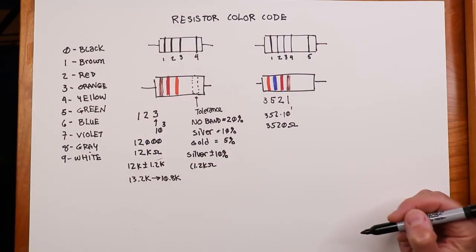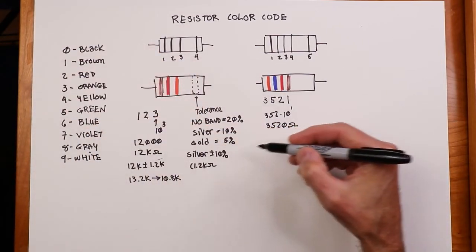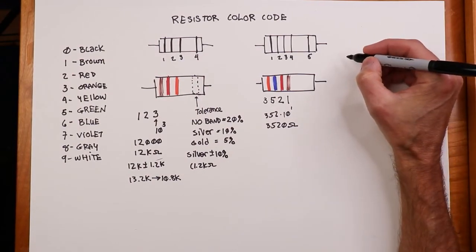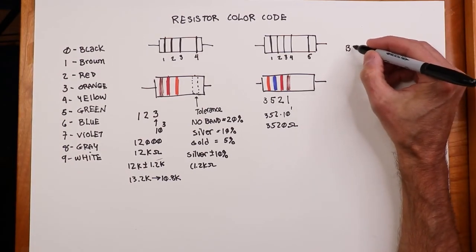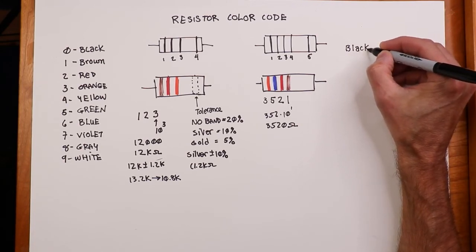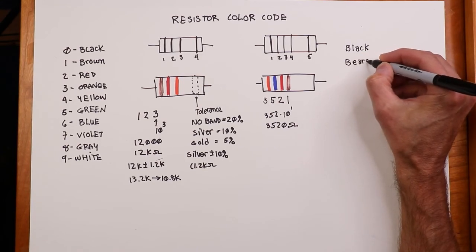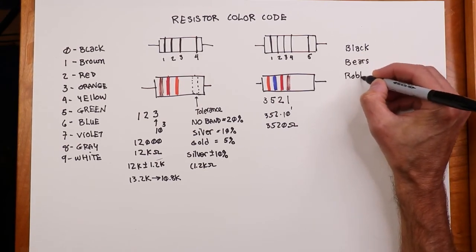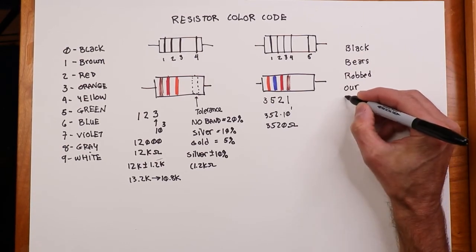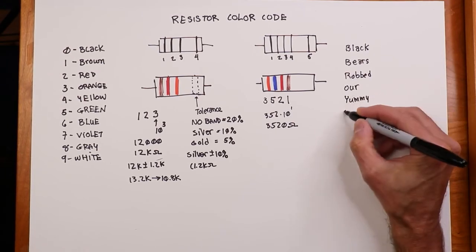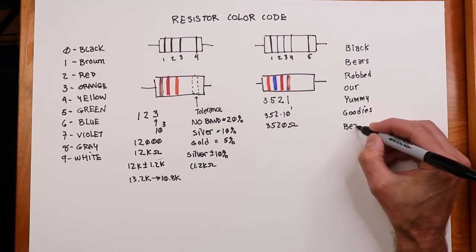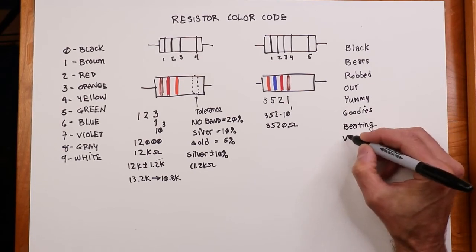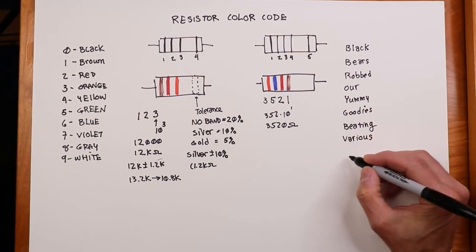How do you remember this? Well, there's different techniques. A little mnemonic that you might use. So in other words, the first letter spells out a little sentence. That's the one I like. I like to call it the Yogi Bear Picnic Mnemonic. So it goes: Black bears robbed our yummy goodies, beating various, or voracious, your choice, gray wolves. Poor wolves, always getting the short end of the stick.